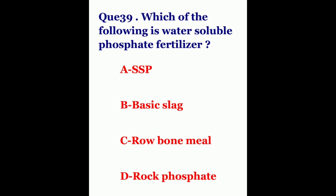Question 39. Which of the following is a water-soluble phosphate fertilizer? The options are SSP, Basic Slag, Raw Bone Meal, or Rock Phosphate. The correct answer is SSP.